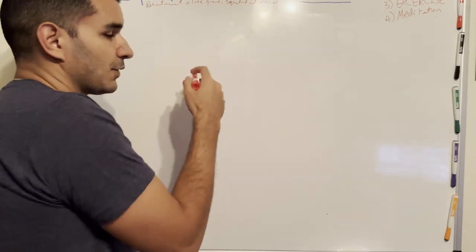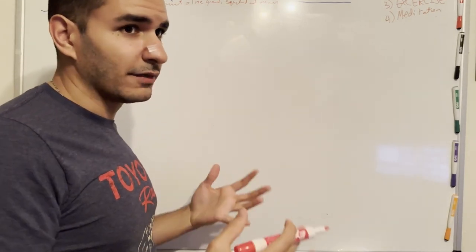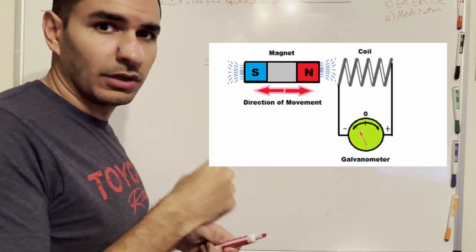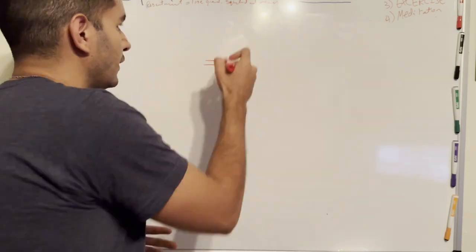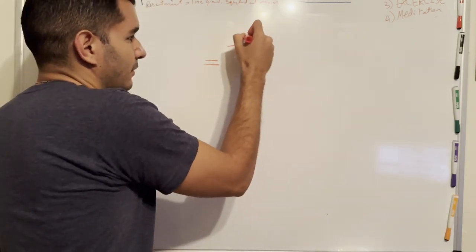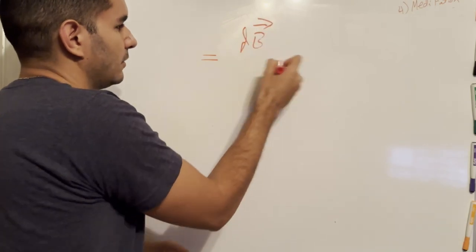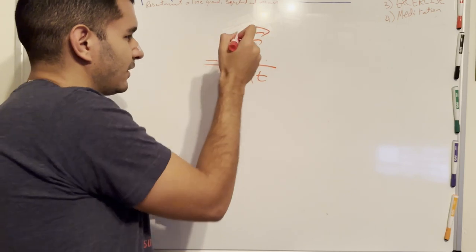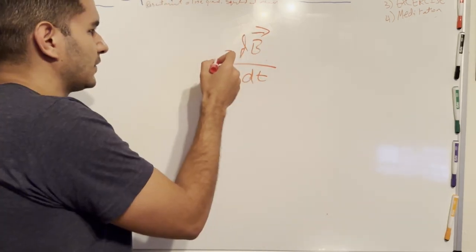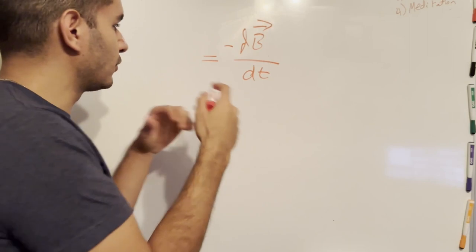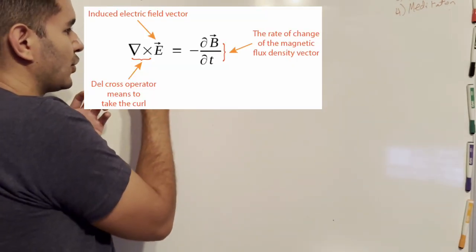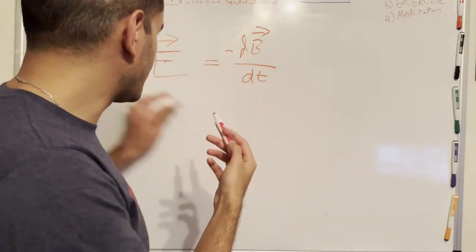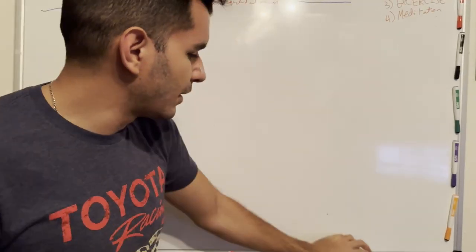This brings us to equation number three, based on the famous experiments of Michael Faraday. He discovered that if you pass a magnet through a coil, that coil starts inducing current. In other words, if you have a changing magnetic field — dB/dt, a vector because it has direction — that changing magnetic field will essentially be equivalent to some change in the electric field. This is called Faraday's Law.